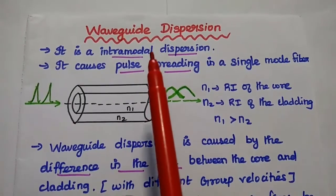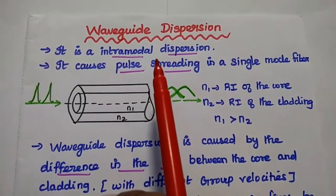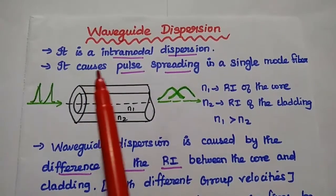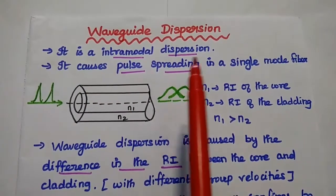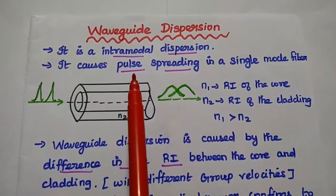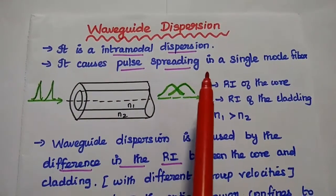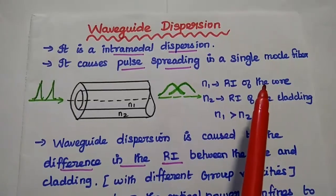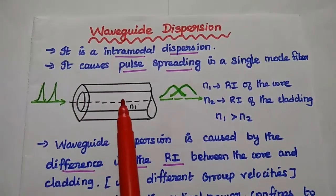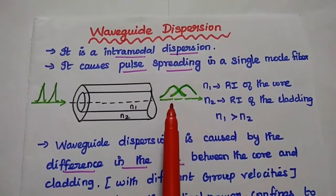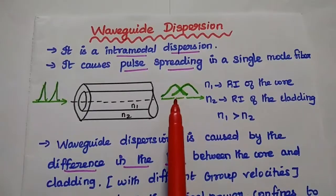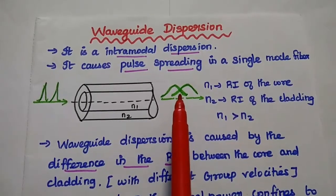Dear students, now we are going to discuss waveguide dispersion in detail. It is a type of intramodal dispersion in optical communication systems. It causes pulse spreading or pulse broadening effect in a single-mode fiber. When an input optical signal is given to this fiber cable, at the output side we can get the output signal with pulse broadening effect.